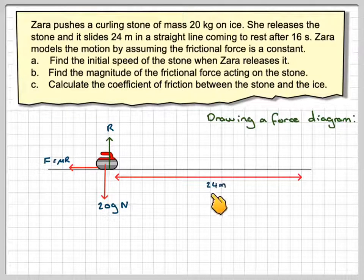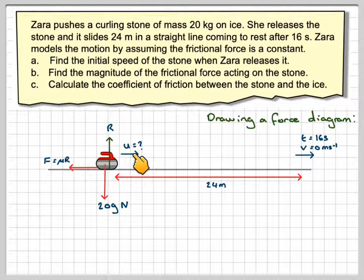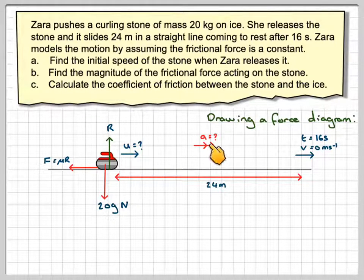We know it's going to travel 24 metres. We know it's going to take 16 seconds to do that. We know the final velocity must be equal to zero because it comes to rest. What we need to find is the initial velocity which we'll call u and we will also need to find the acceleration. So two unknowns suggest that we need to use two equations.